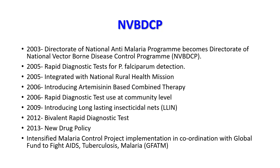There were certain achievements and changes made to the NVBDCP over the years. In 2003, it started as the Directorate of NVBDCP from the National Anti-Malaria Program. In 2005, rapid diagnostic tests for Plasmodium falciparum detection were introduced and it was integrated with the National Rural Health Mission. In 2006, Artemisinin-based combination therapy was introduced and RDTs were made available at community level by ASHAs. In 2009, long-lasting insecticidal nets were introduced. In 2012, bivalent rapid diagnostic tests were made available, and in 2013 a new drug policy was introduced.